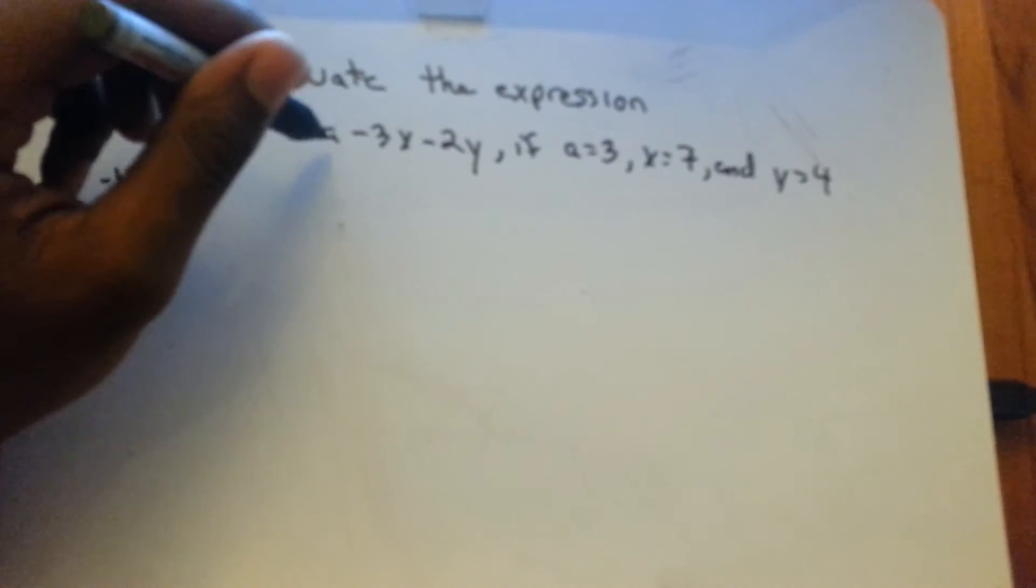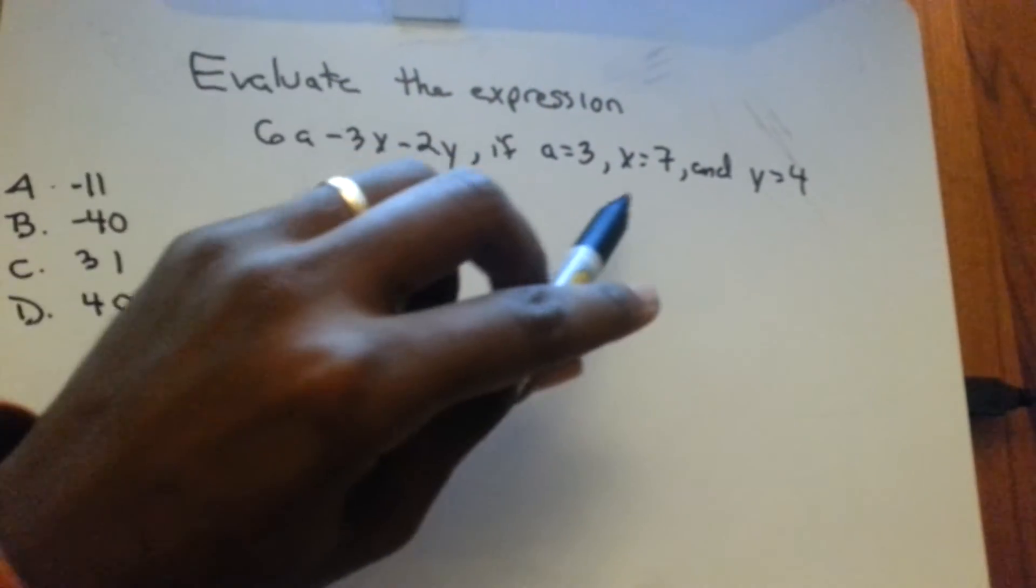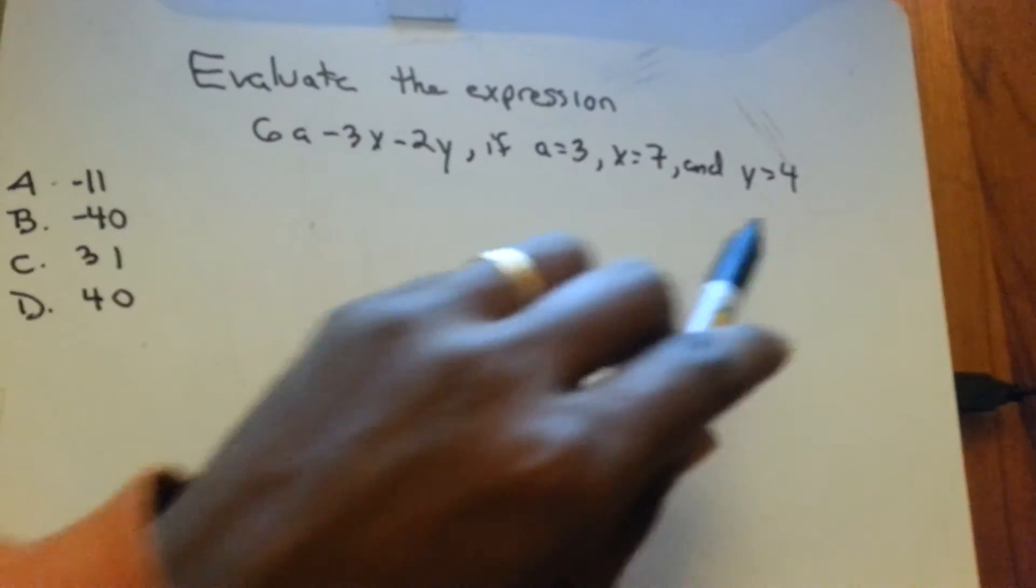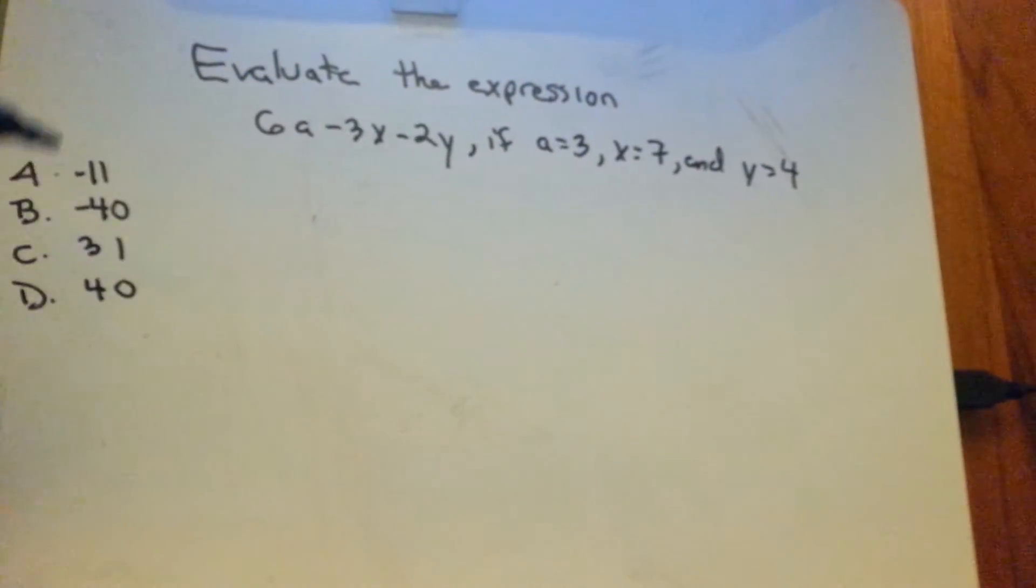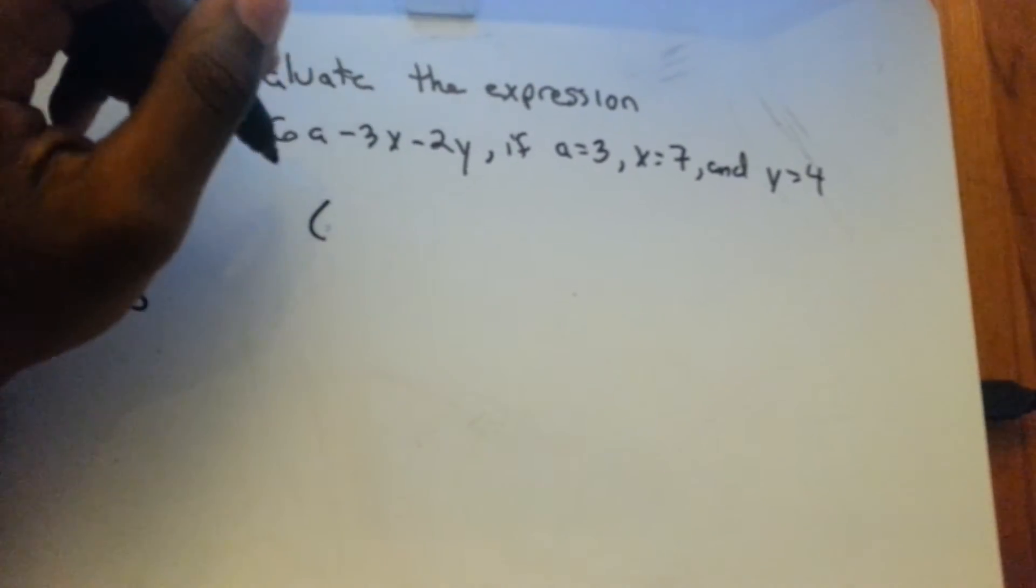So wherever a is, you put in that... a equals 3, put 3 in there, put a 7 in where the x is, and put a 4 in where the y is, and then you solve. So I'll just go through and substitute those in.